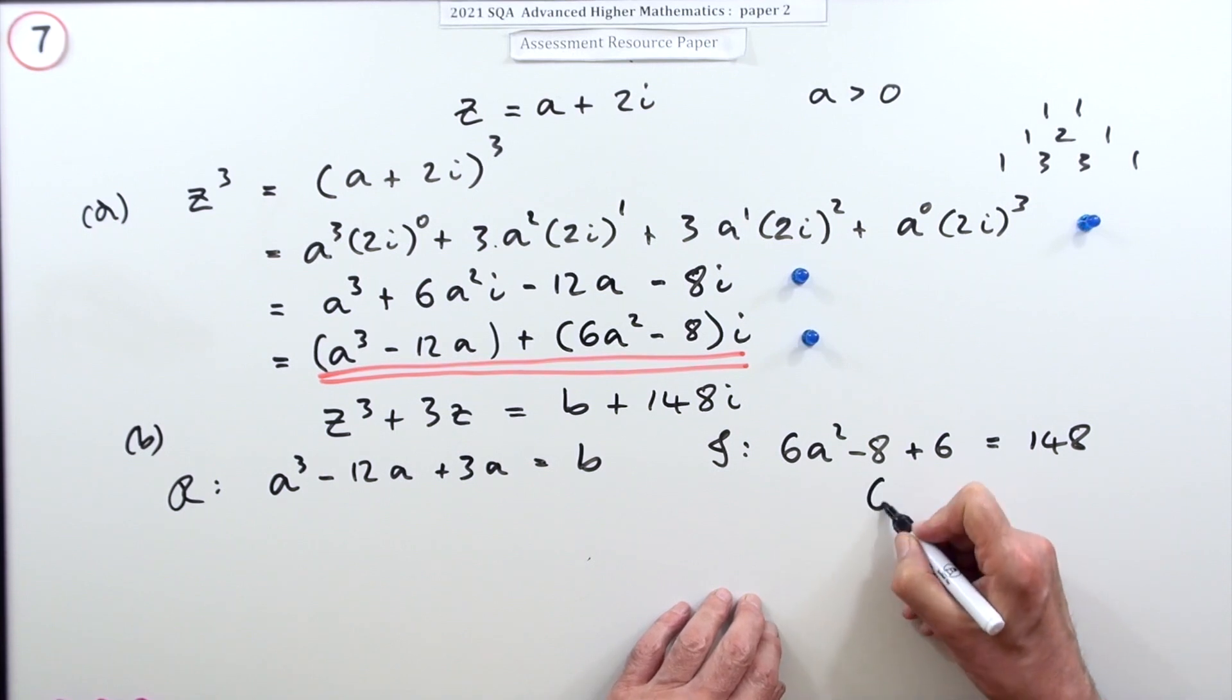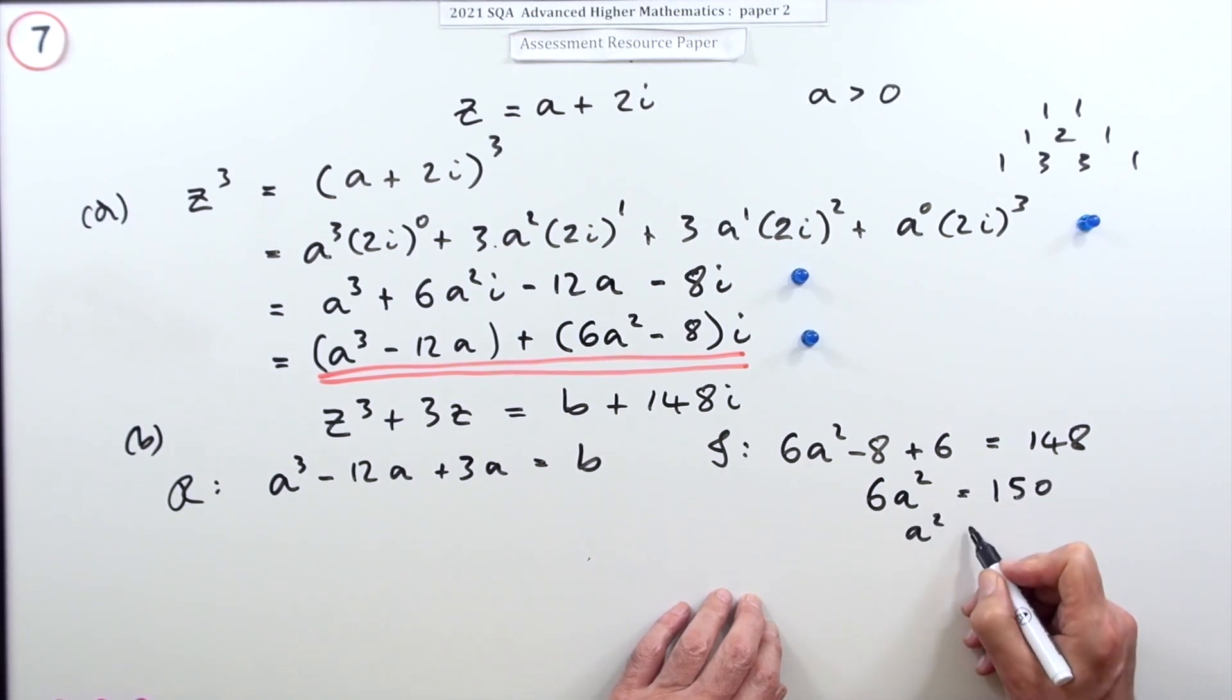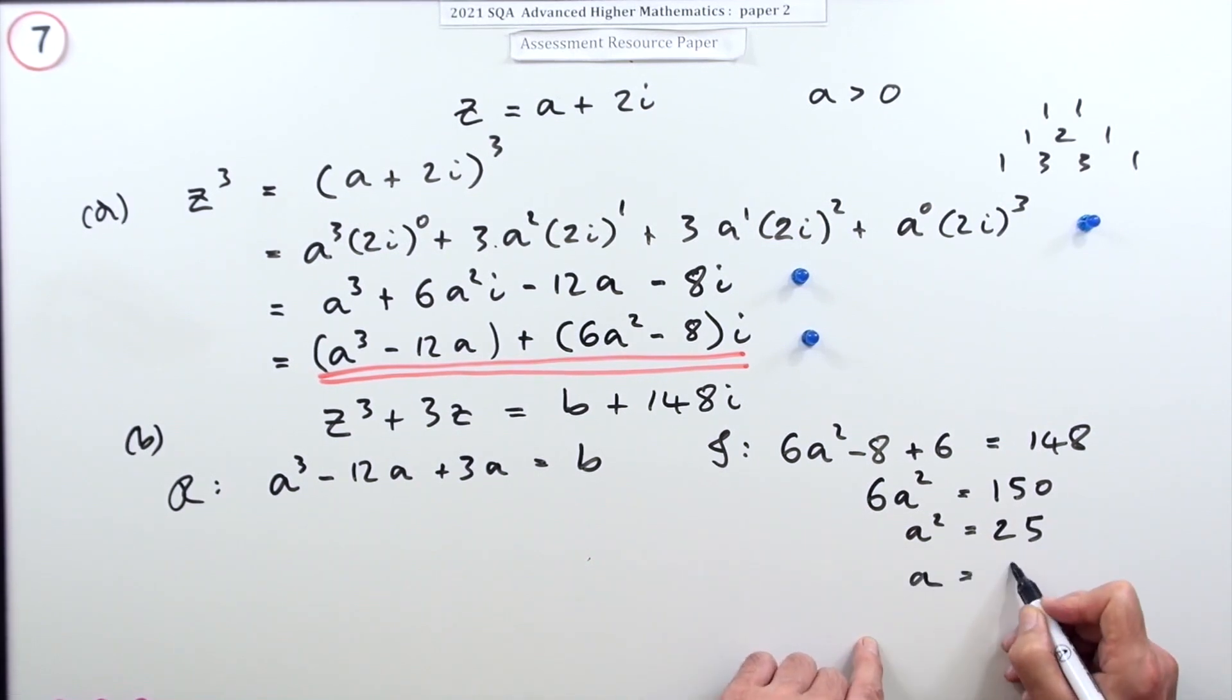I can proceed with this: 6a squared minus 2 equals 150, so a squared equals 25, which means a equals 5. Could be plus or minus, but it tells you a is greater than zero, so there was a mark for that part, the imaginary part.